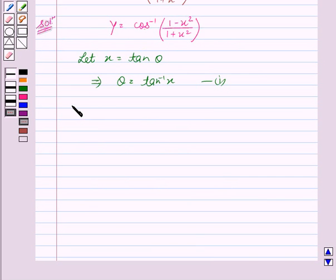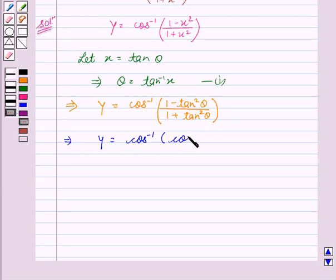This implies y equals cos inverse of (1 minus tan squared theta) upon (1 plus tan squared theta). This implies y equals cos inverse of cos 2 theta, as cos 2 theta equals (1 minus tan squared theta) upon (1 plus tan squared theta).